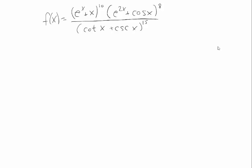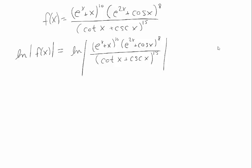So that brings us to logarithmic differentiation. Suppose I want to differentiate this monster of a function. We know how to do it using the chain rule, the product rule, and the quotient rule, but it's going to be extremely painful. Think about the quotient rule with that low d high, and when you differentiate the top you have to use the product rule, and you have to use the chain rule because of those exponents. So a faster way to do this is to go via a logarithm. If I take the log of both sides, multiplication becomes addition, division becomes subtraction, and exponents become coefficients.